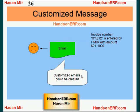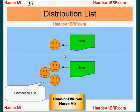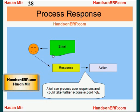Using Oracle Alert Module, you can send out customized emails. For example, you can display invoice numbers, invoice amounts, and usernames in your email message. All this information is retrieved using a SELECT statement. Oracle Alert can send out email to one individual or to a distribution list. When an email is received by a user from Oracle Alert, the user can reply back, and Oracle Alert is capable of reading those responses. Further actions could be taken based on the response.